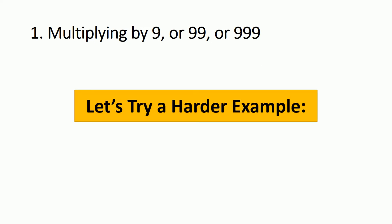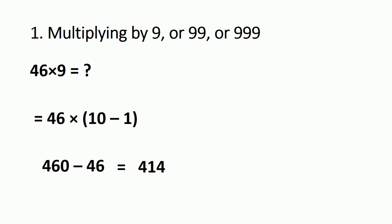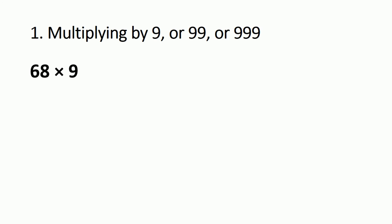Let's try a harder example: 46 multiplied by 9. The answer is 414. Using this trick, write 10 minus 1 instead of 9. So 46 multiplied by 10 is 460 — just write a 0 at the end. Then subtract 46: 10 minus 6 is 4, 5 minus 4 is 1, 4 minus 0 is 4, giving 414. Similarly, 68 multiplied by 9: using 10 minus 1, that's 680 minus 68, which equals 612.